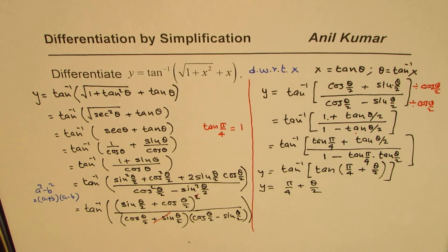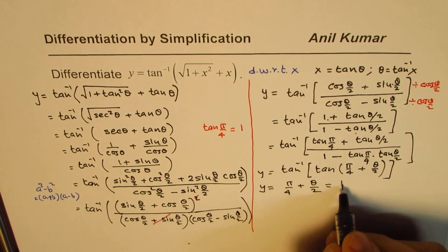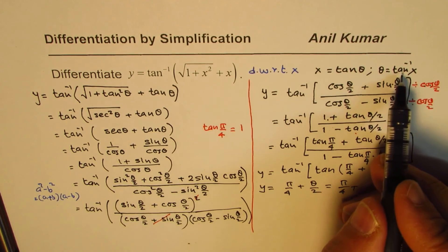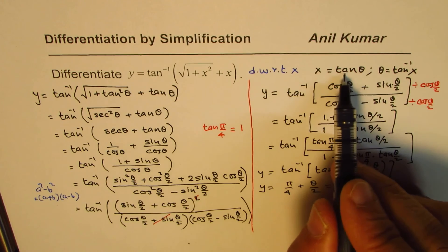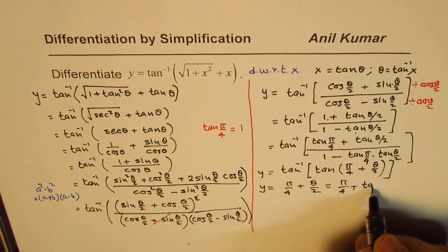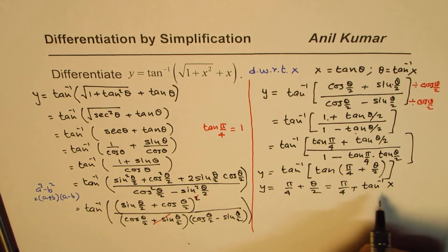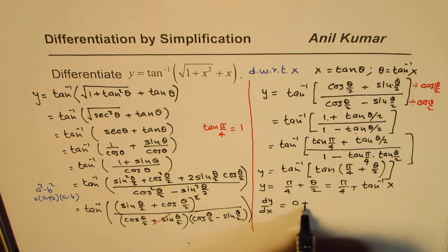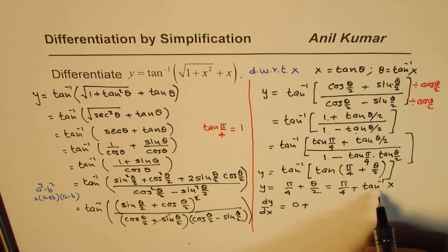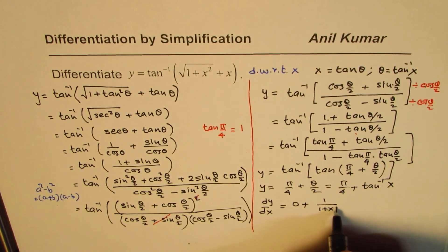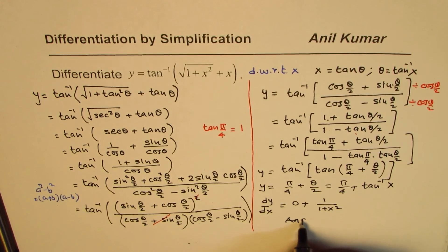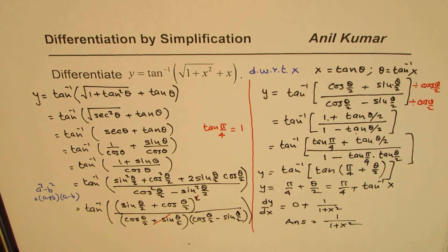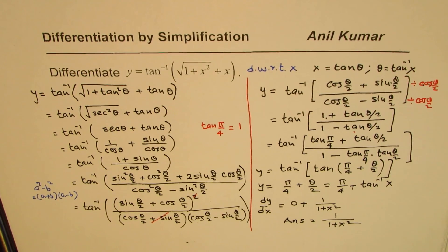Now it is easy to write the derivative. Since theta equals tan inverse x, we have y equals pi/4 plus (1/2) tan inverse x. Differentiating with respect to x, dy/dx equals 0 plus 1 over 1 plus x squared, times one half. So the answer is 1 over 2(1 plus x squared). That is how you solve such questions.